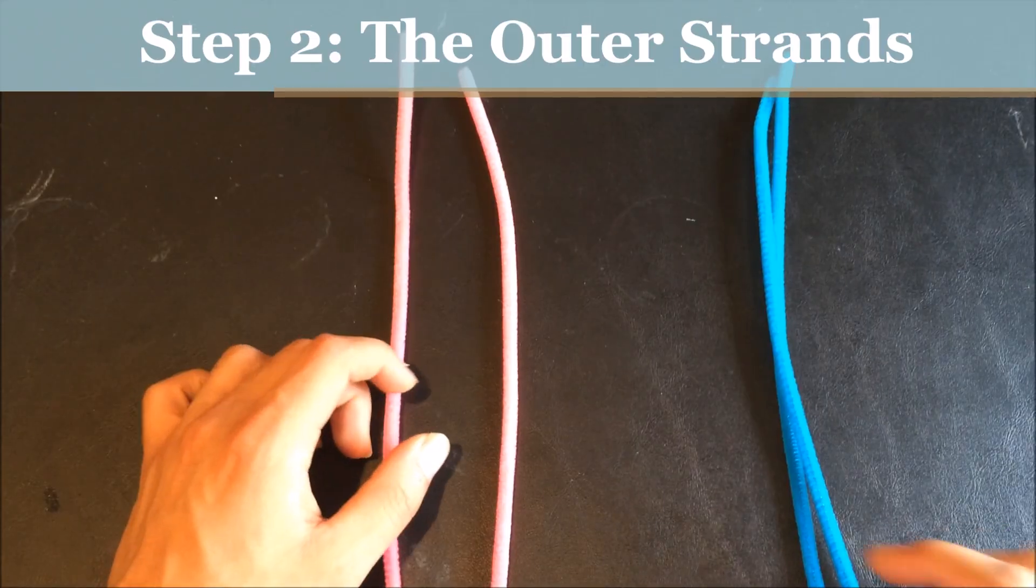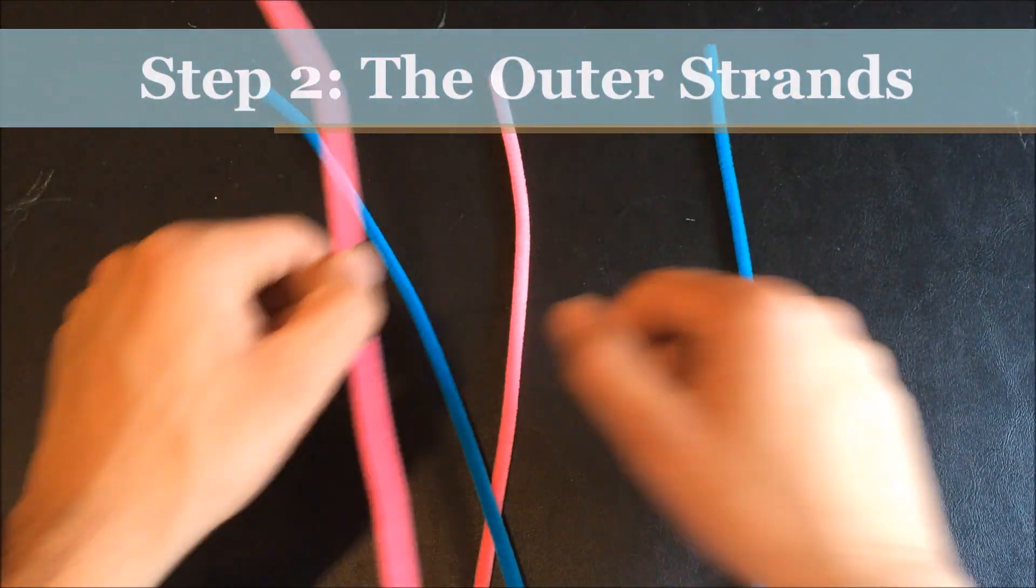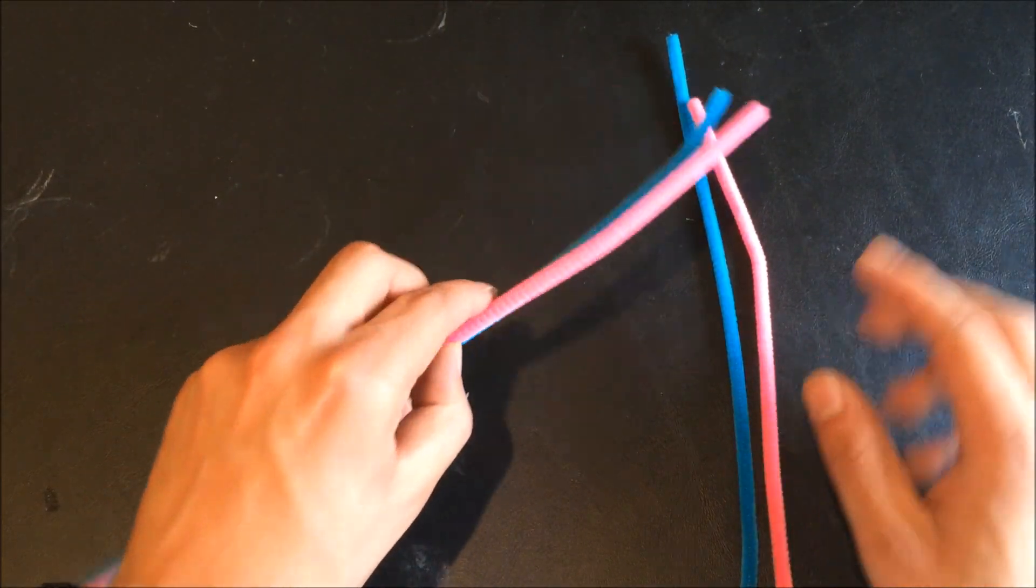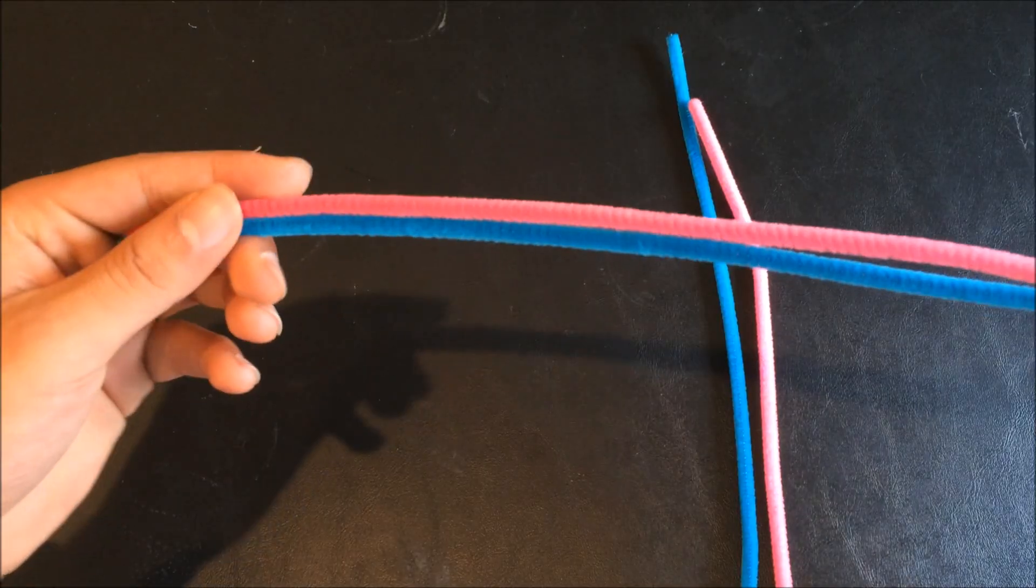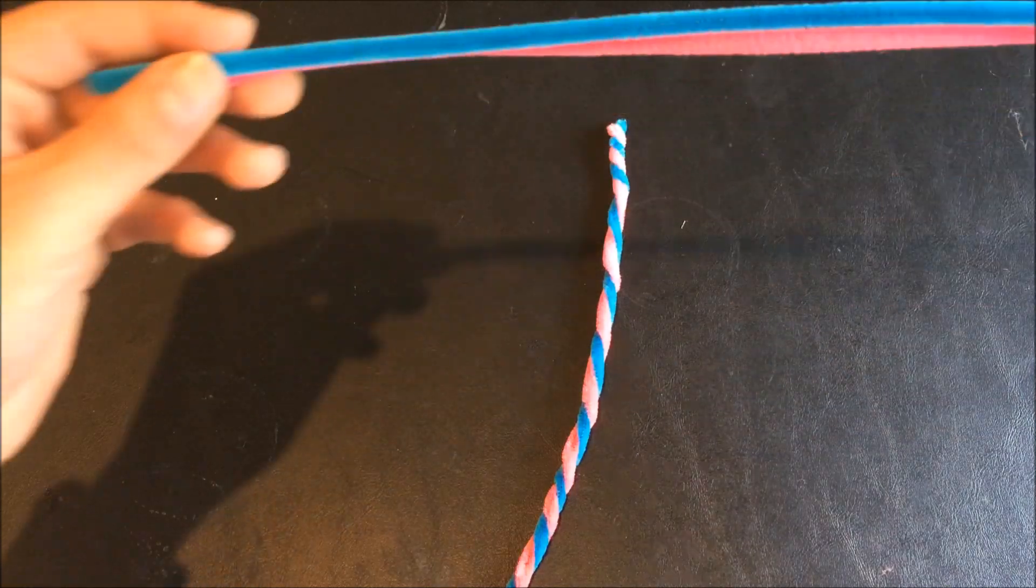Now let's make the sides of your model. Go ahead and take these two different colors and just pair them up like that. Once you've done that, you want to twist these together to form a single strand. Take the next two.